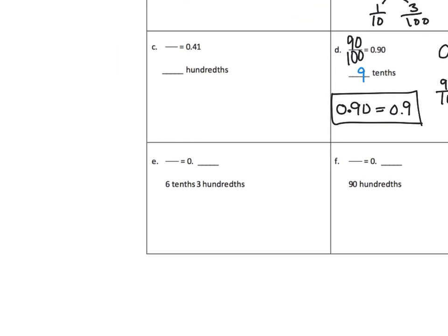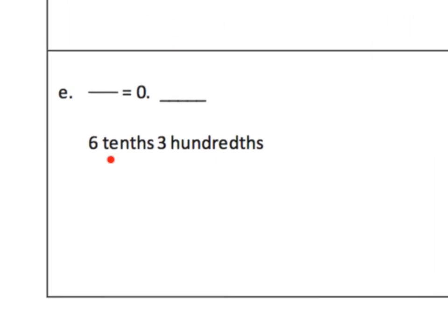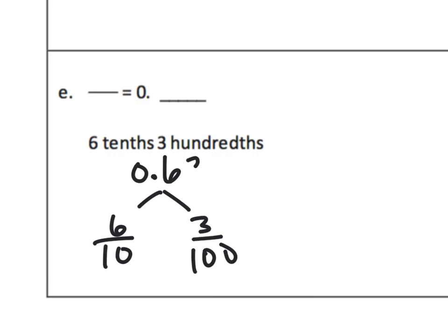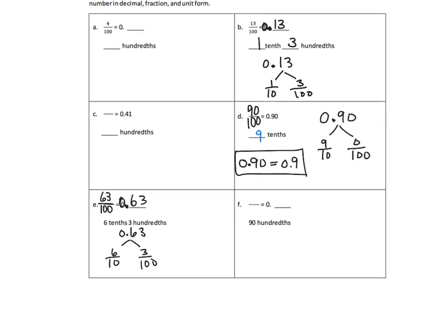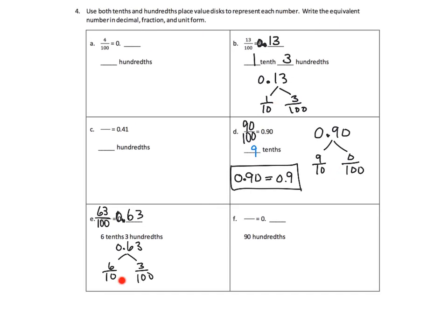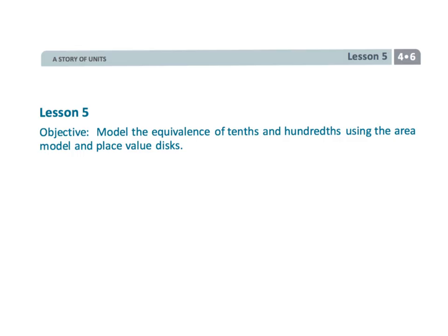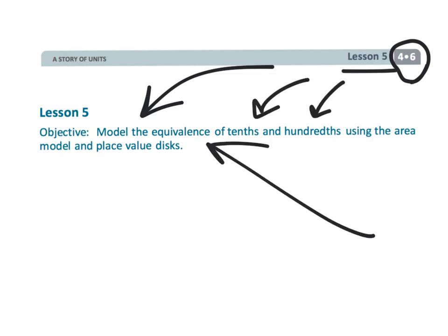For problem E, we have the unit form six tenths plus three hundredths. Six tenths plus three hundredths equals zero point six three, so as a decimal that's zero point six three, and as a fraction that's sixty-three over one hundred. That wraps up fourth grade module six lesson five, using models to understand the equivalence of tenths and hundredths in a variety of different representations and strategies.